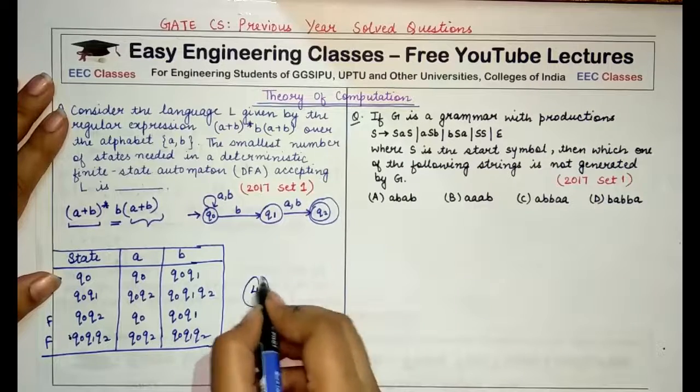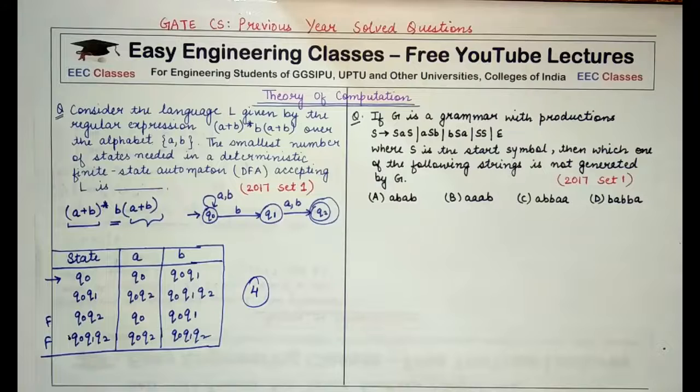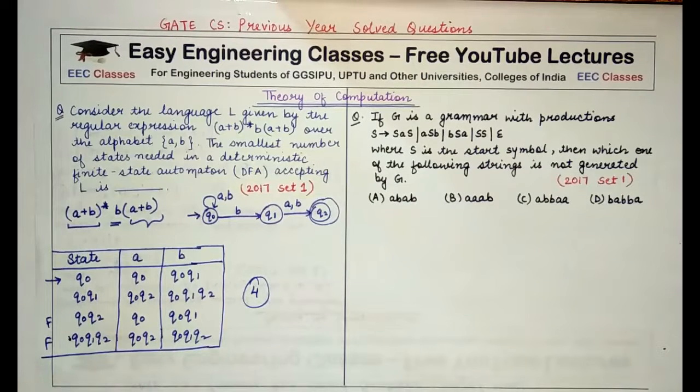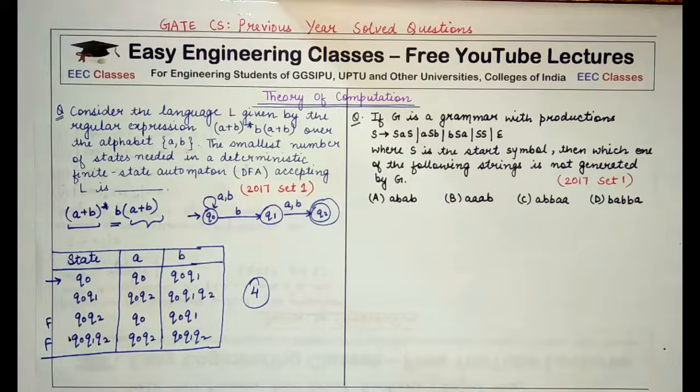These are the four states that would be possible in my deterministic finite automata and the answer for this would be four. You don't need to draw and see the deterministic finite automata. This is a quick way of converting from the NFA and seeing from the table how many states will be possible. Two non-final states, two final states, and a total of four states in the DFA.